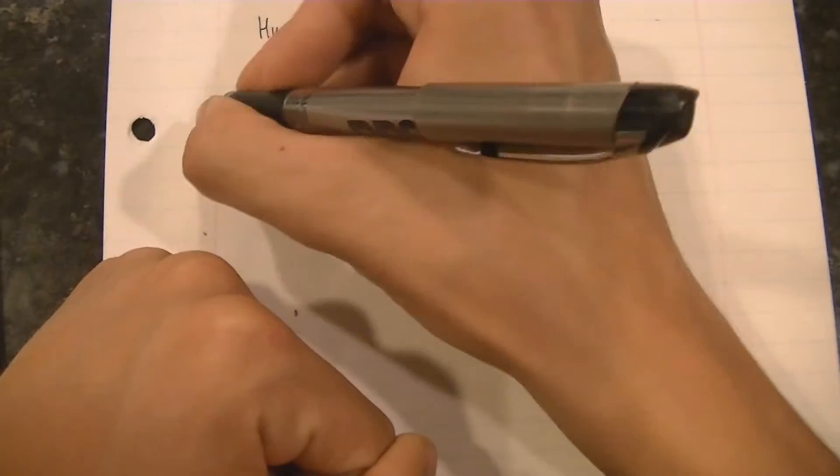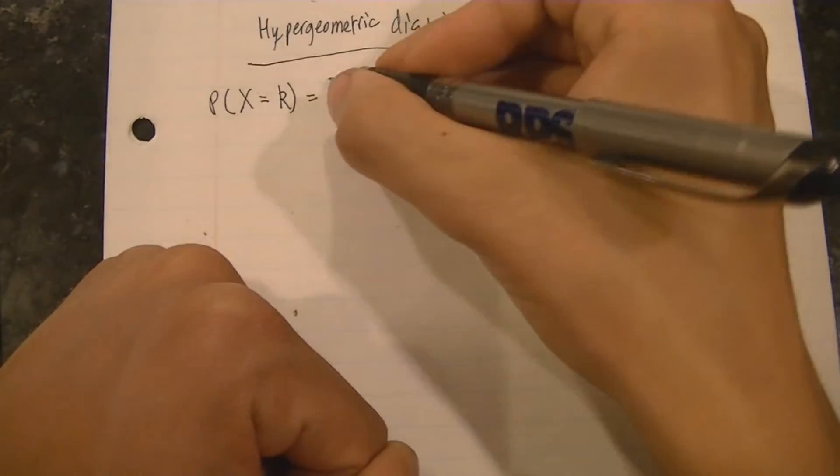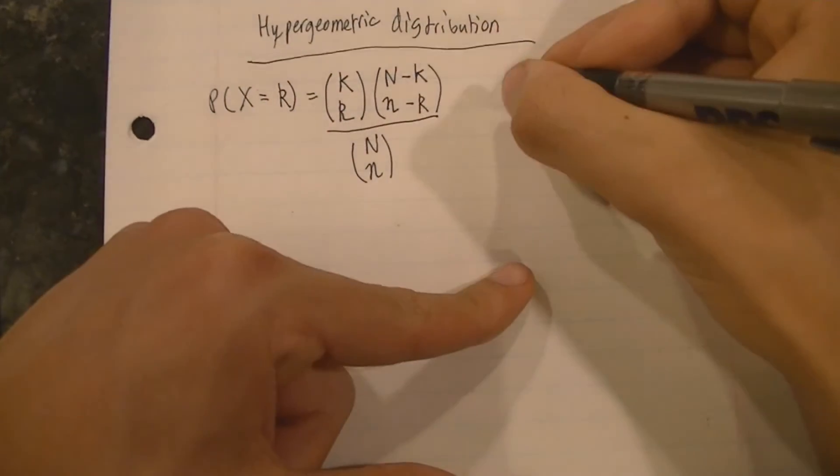which will give us the probability that x takes on a random variable k. Here is the formula for the hypergeometric distribution, quite big, however quite useful.